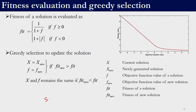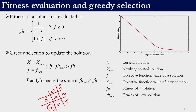A major difference between ABC and many other algorithms is the use of the term fitness. In most algorithms discussed so far, fitness directly corresponded to the objective function value. That is not the case in ABC — the fitness is related to the objective function by a specific relation: if the objective function value f is greater than or equal to 0, then fitness = 1/(1+f); and if f is less than 0, then fitness = 1 + |f|.